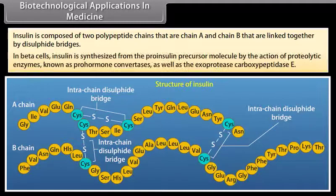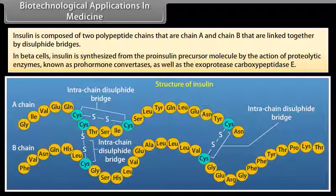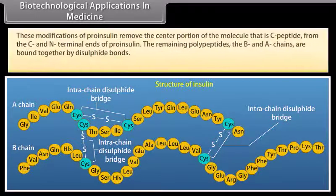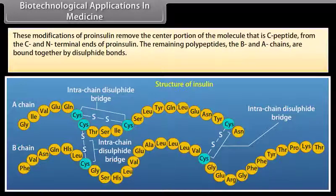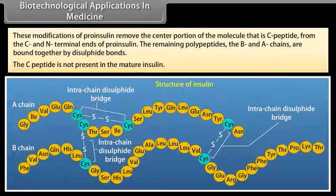In beta cells, insulin is synthesized from the pro-insulin precursor molecule by the action of proteolytic enzymes known as pro-hormone convertases, as well as exoprotease carboxypeptidase E. These modifications of pro-insulin remove the center portion of the molecule — the C-peptide — from the C and N-terminal ends of pro-insulin. The remaining polypeptides, the B and A chains, are bound together by disulphide bonds. The C-peptide is not present in the mature insulin.